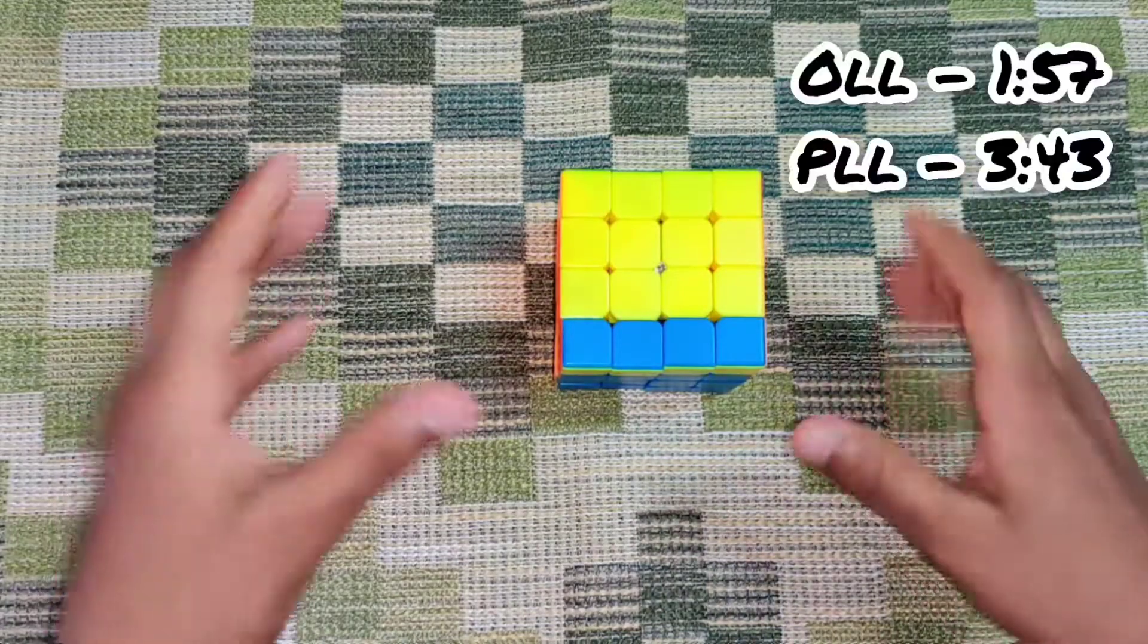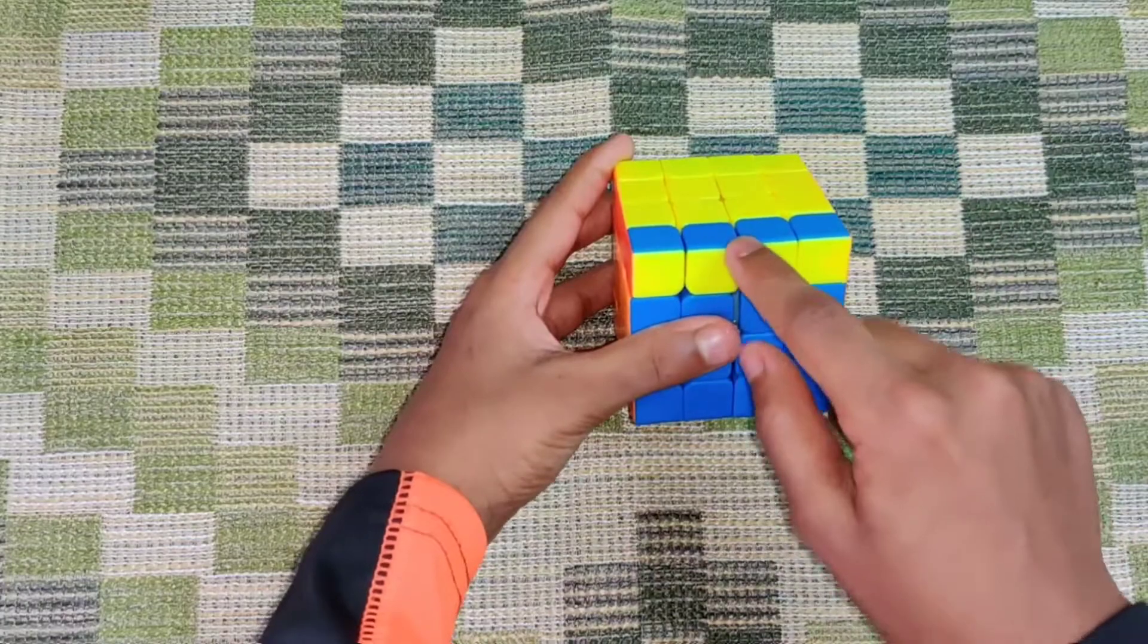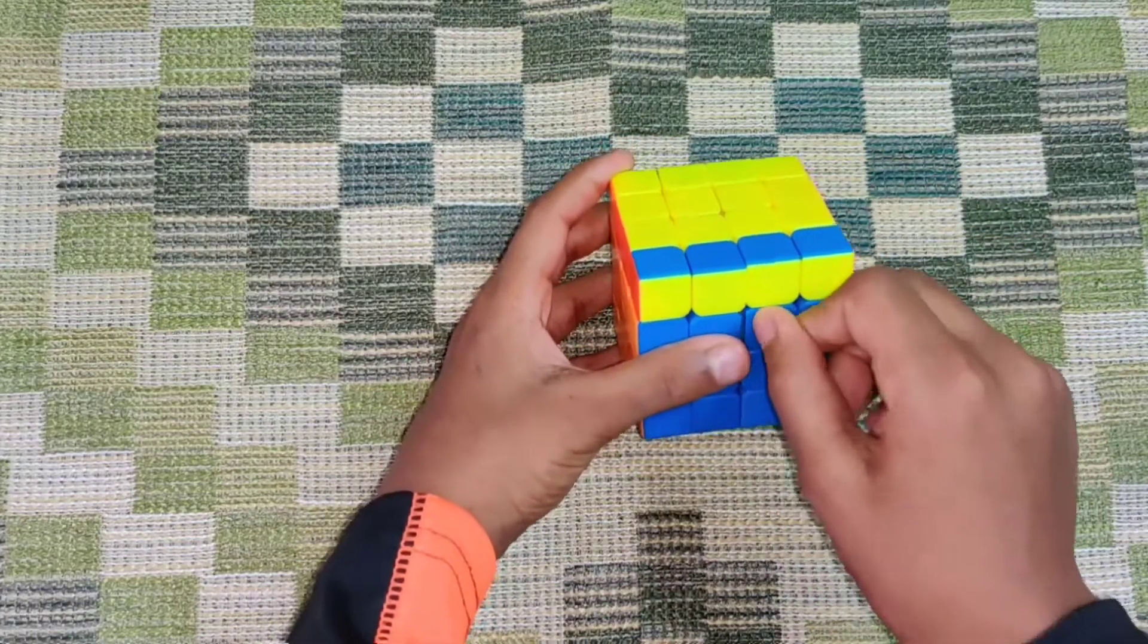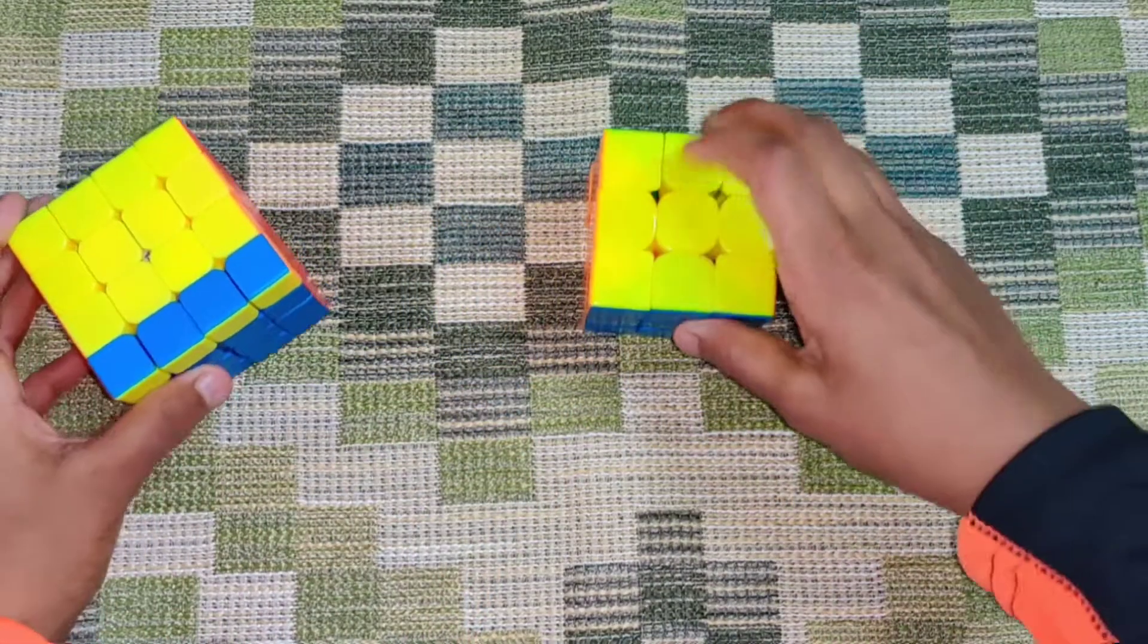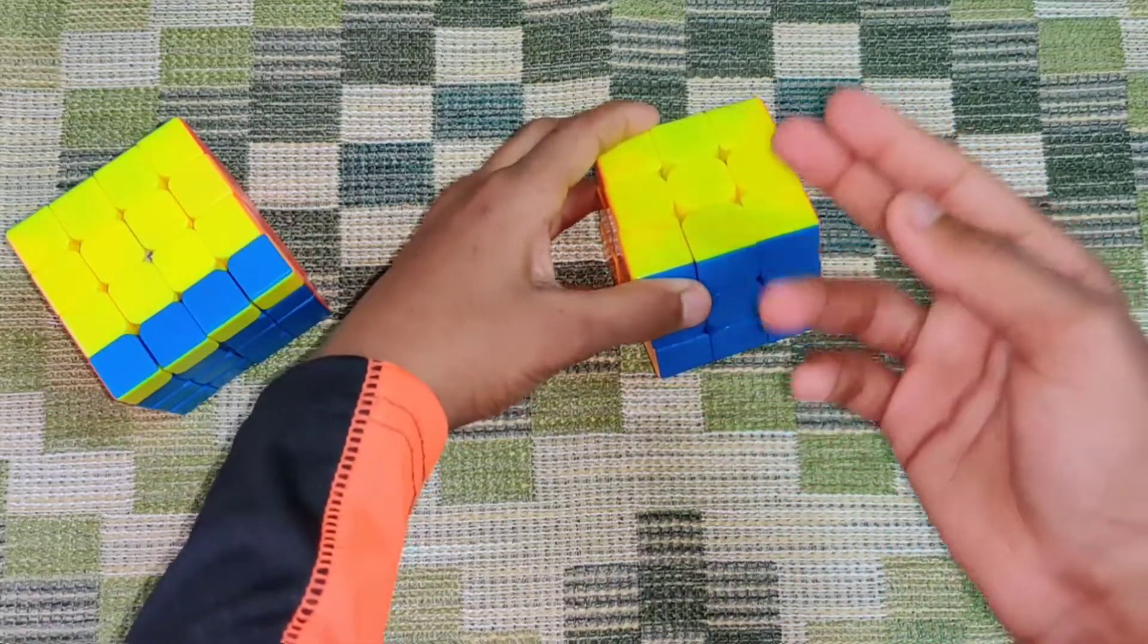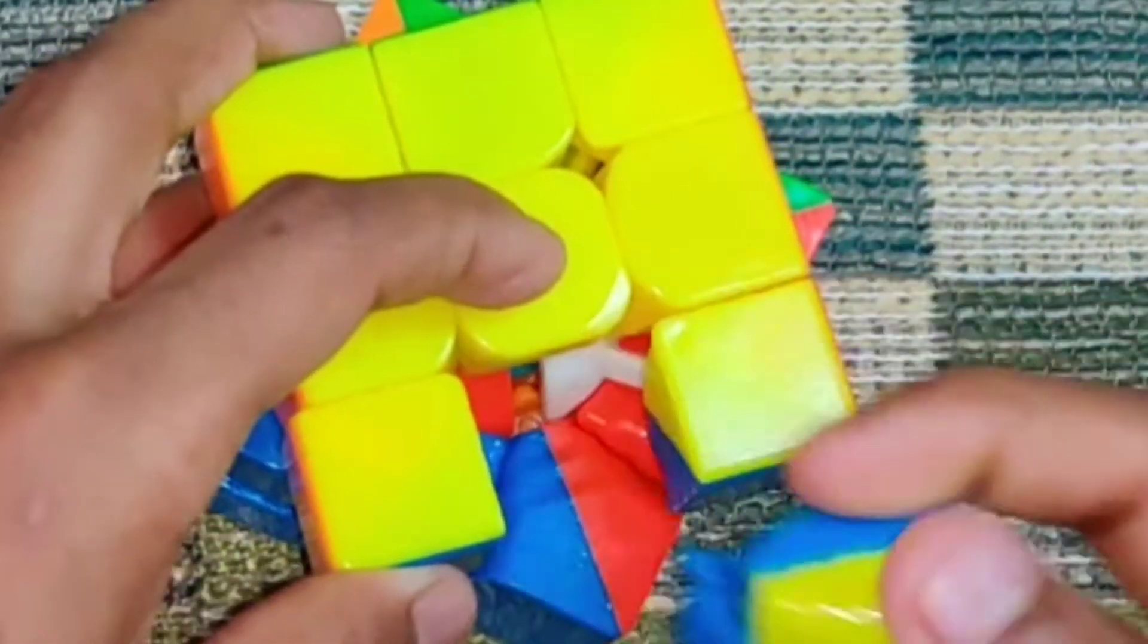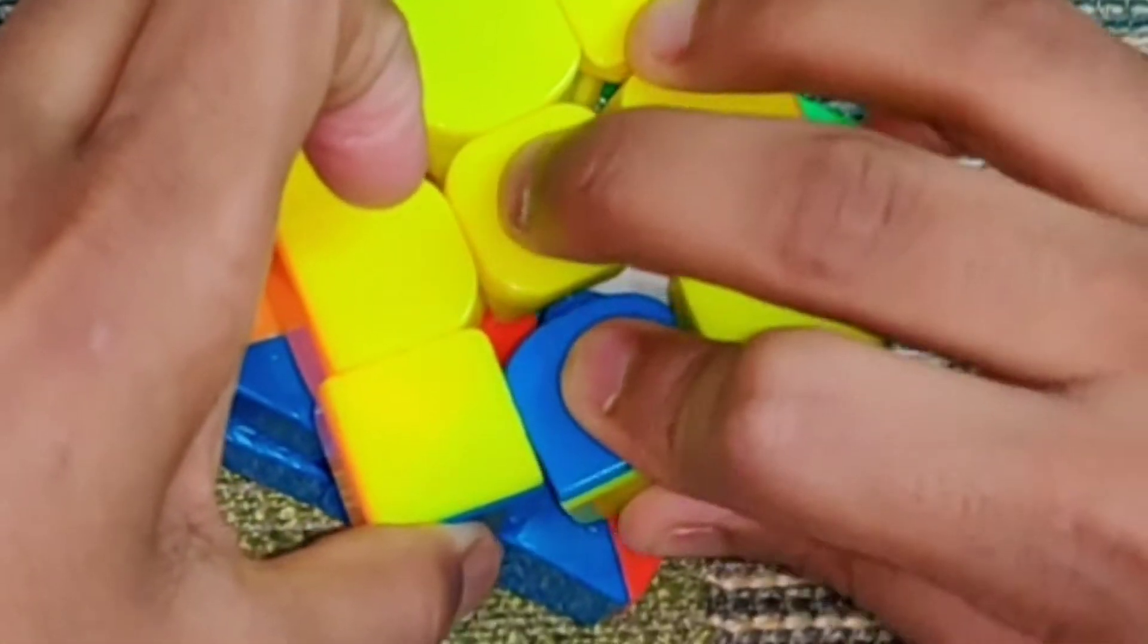So basically, OLL parity is when your cube looks something like this, when one edge is just flipped around. On a 3x3, it's impossible to flip only one edge. If you were to, then the cube would be impossible to solve. You can take out an edge and put it back in flipped, but now the cube will be absolutely impossible to solve.